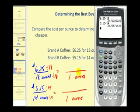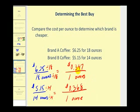Let's go ahead and record this information on the screen, and from this we can see pretty easily that brand A is cheaper.